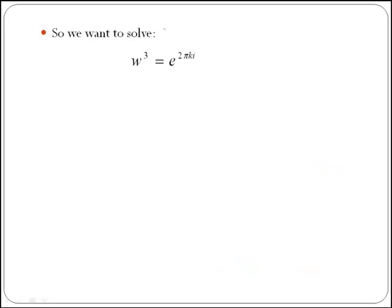With the right hand side written in exponential form, our equation w to the 3 equal to 1 turns into w to the 3 is equal to e to the power of 2 phi k i.